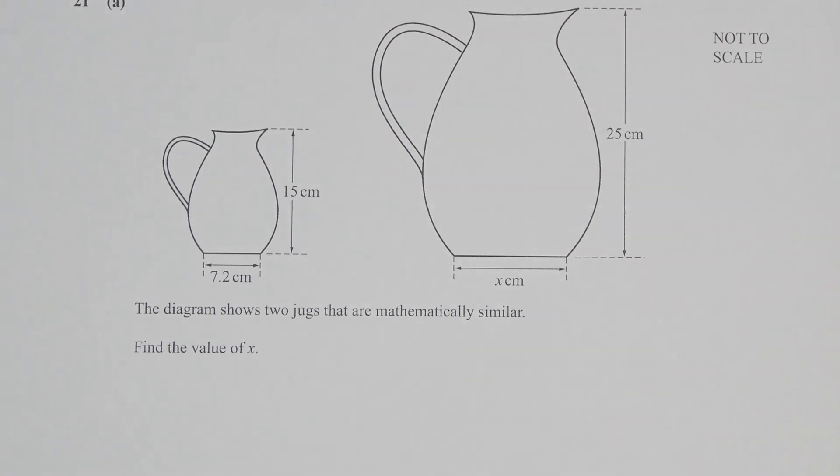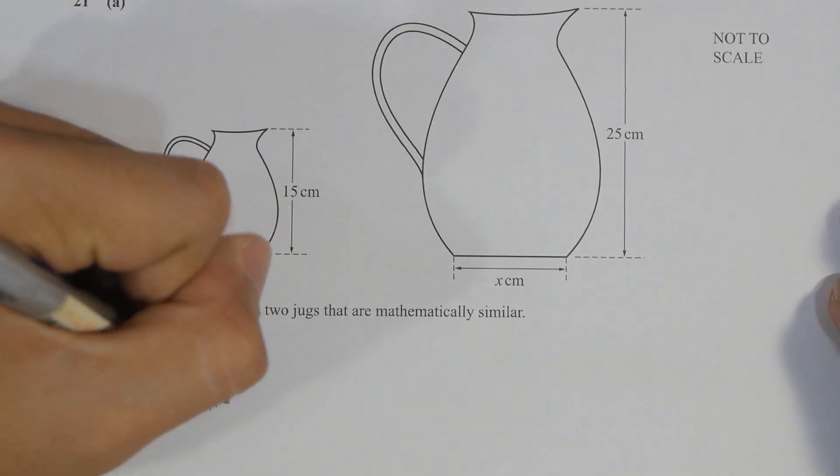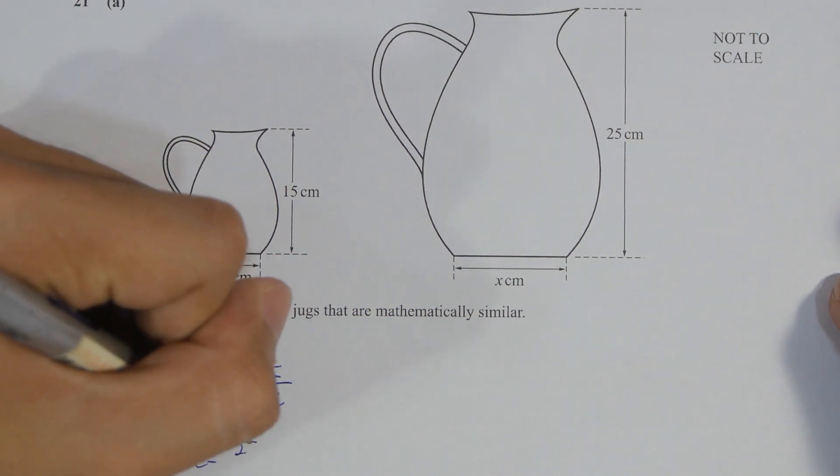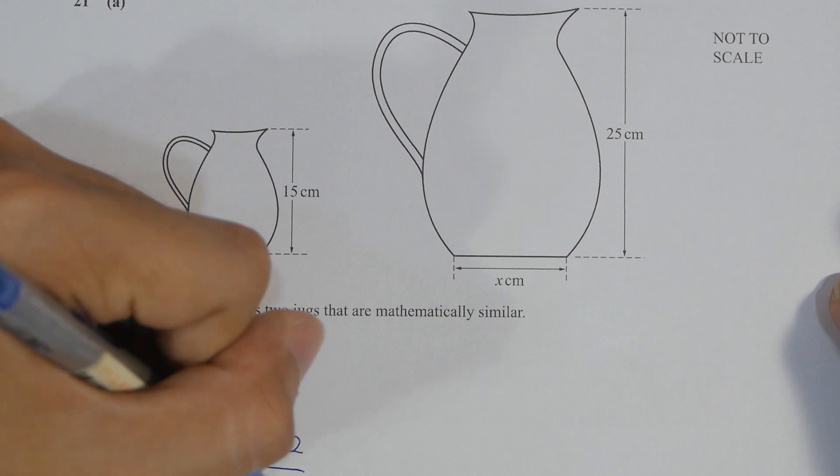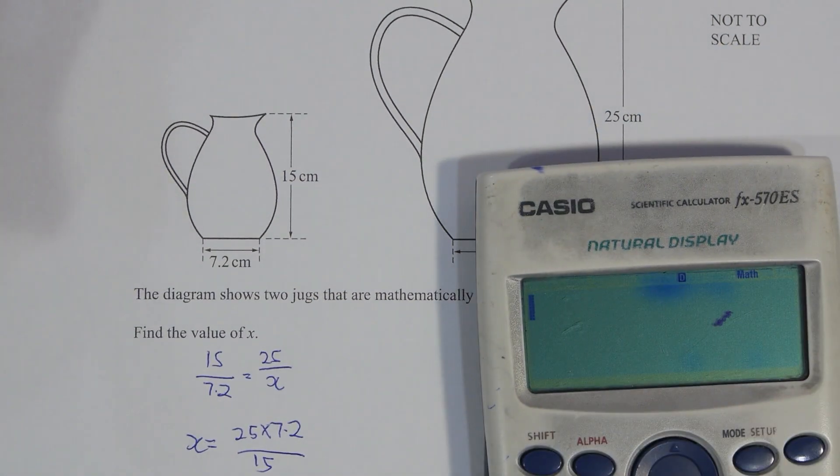We have question 21. This one, keyword here is mathematically similar. So 15 over 7.2 equals 25 over x, and x value will be 12 here.